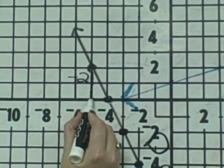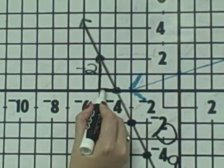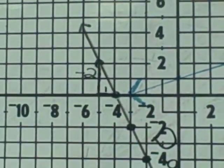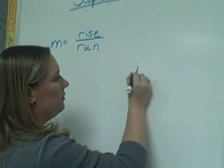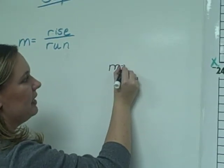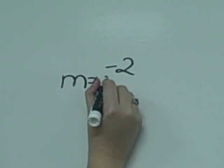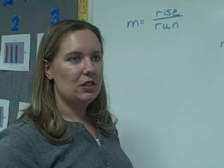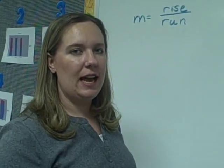And then we're running over a positive one, or to the right one. So the slope of this line, the slope of the black line, is negative two over positive one. Slope is always a fraction. Slope should always be written as a fraction.